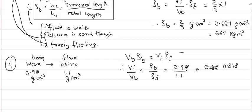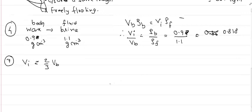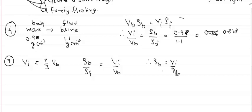Question 3: A wooden block floats in water with two-thirds of its volume submerged. Calculate the density of the wood. Since VI = (2/3)·VB and fluid is water with density 1 g/cm³, ρB = (VI/VB)·ρF = (2/3)·1 = 0.667 g/cm³.